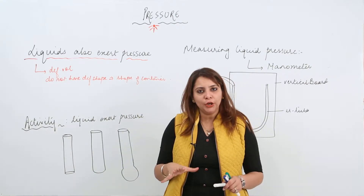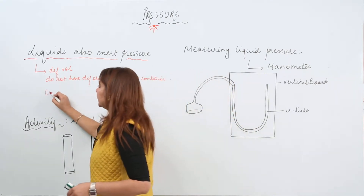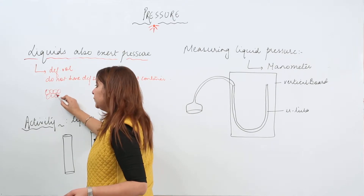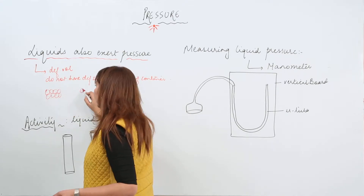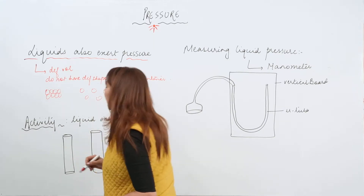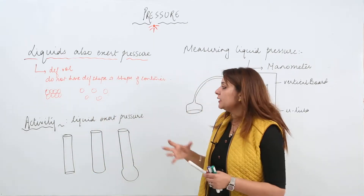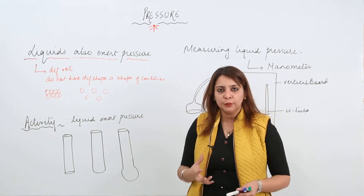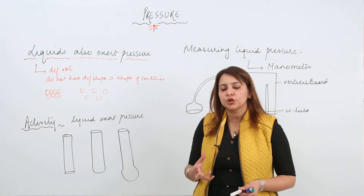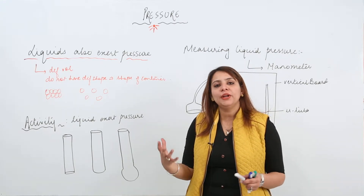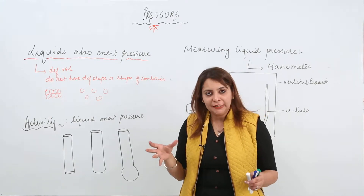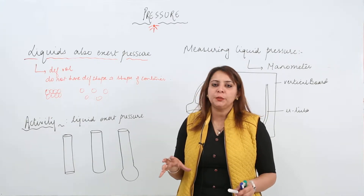Liquid consists of molecules. In solids, the atoms or molecules are tightly packed, but in liquids they are slightly apart. So in liquid, these particles have spaces between them, which means they can move around — they are in continuous motion. When they are moving, they are colliding with each other and also with the walls of the container.